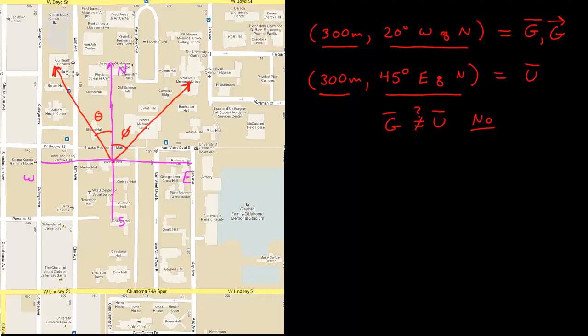Let's take a look at another vector here. Let's say I want to go from Boren Hall to Collings Hall. That's represented by that vector there. If I draw my north and west coordinate system, I find that this vector is 300 meters, also 20 degrees west of north.